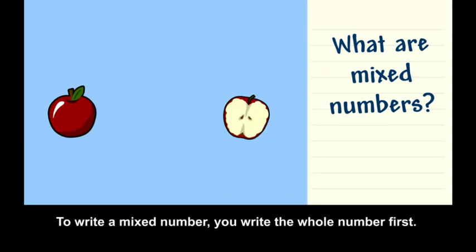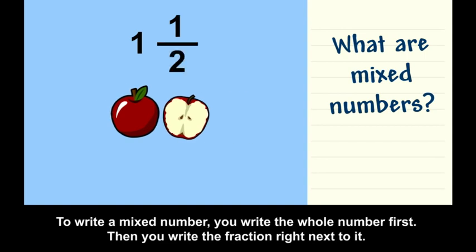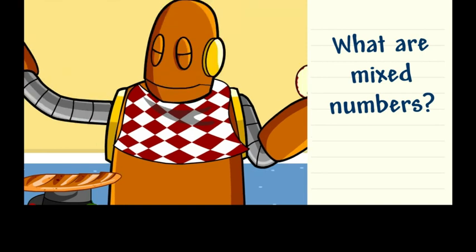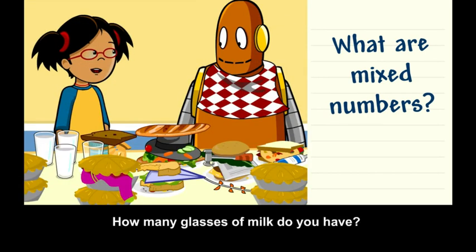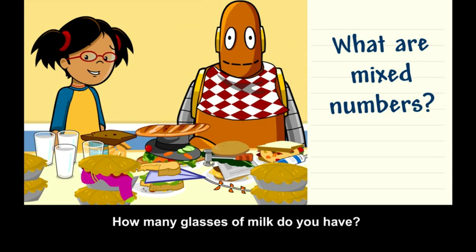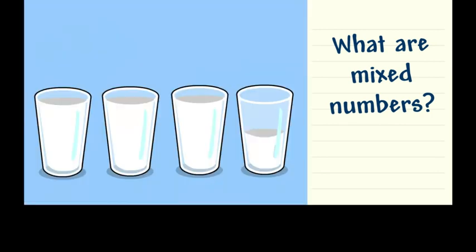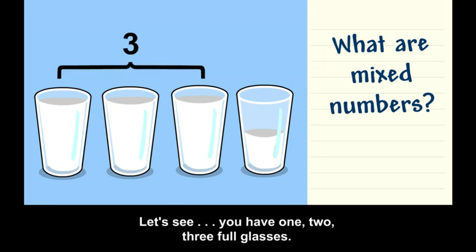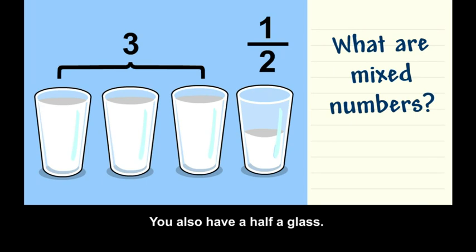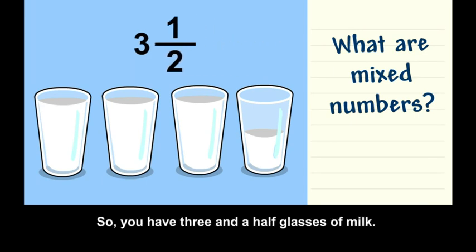A mixed number. To write a mixed number, you write the whole number first, then you write the fraction right next to it. How many glasses of milk do you have? Let's see. You have one, two, three full glasses. You also have half a glass. So you have three and a half glasses of milk. You can write this as a mixed number.